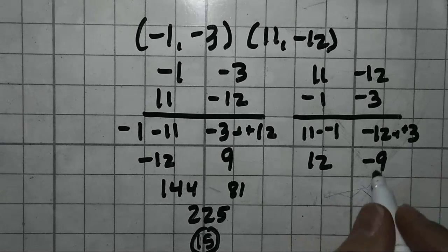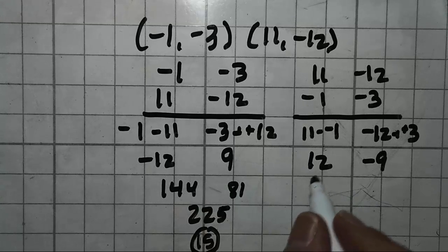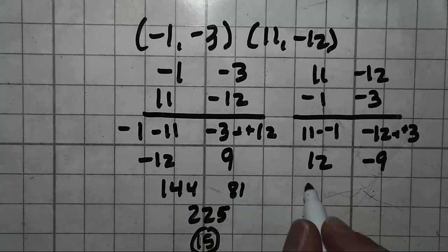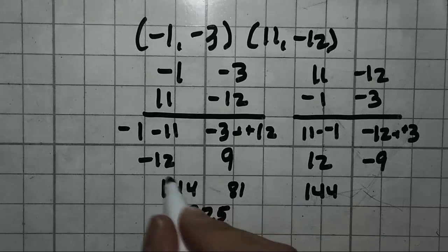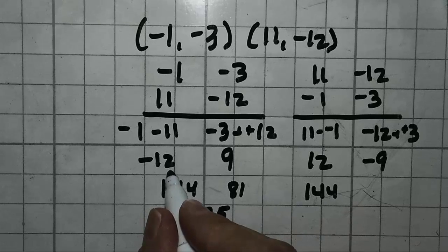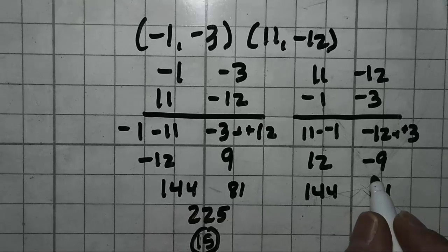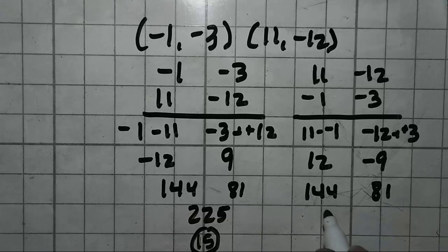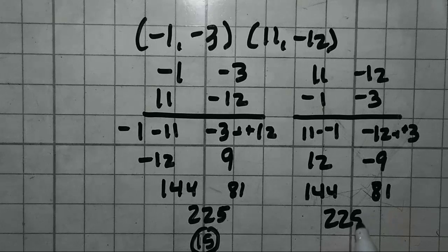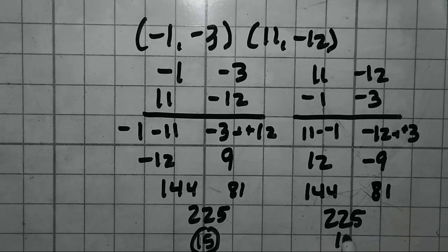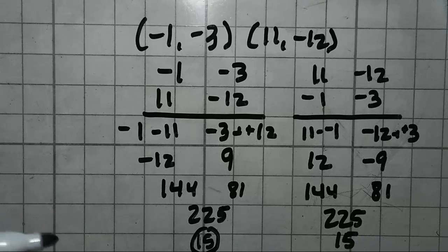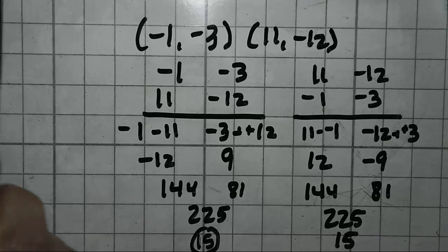So here's where it becomes different. You notice the signs are totally different from here. But when you square it, 12 times 12 is 144, just like negative 12 times negative 12 is. 9 times 9 is 81, negative 9 times negative 9 is 81. Add them together, we're still going to get 225. Take the square root of 225, and you're still going to get 15. So that's how easy it is to find the distance between two points given two points.